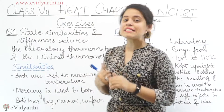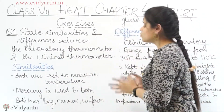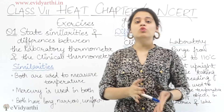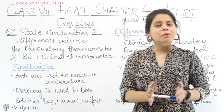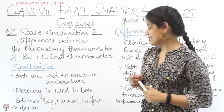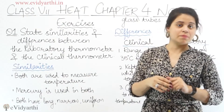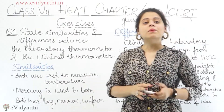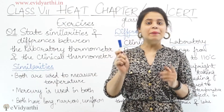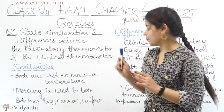Let's first see the similarities. So both are used to measure temperature — donoh thermometer se temperature measure karte hai. Then, mercury is used in both thermometers — donoh thermometer mein mercury use hota hai, jo rise hota hai jis se hame temperature bata chanda. Ye cheez common hai doonoh mein.